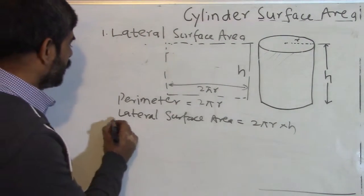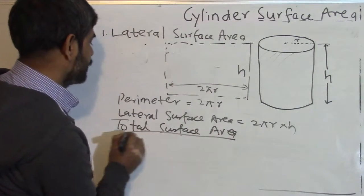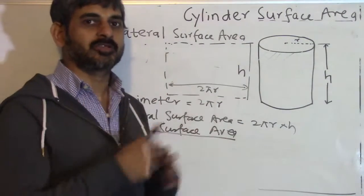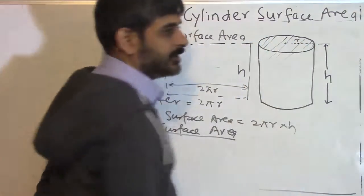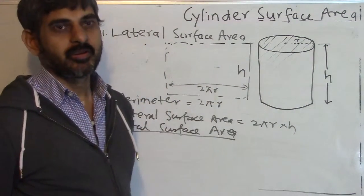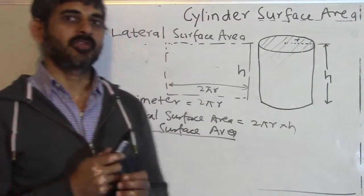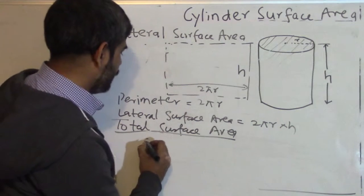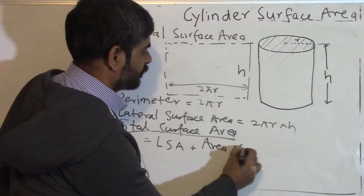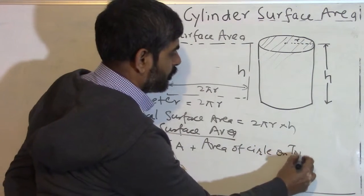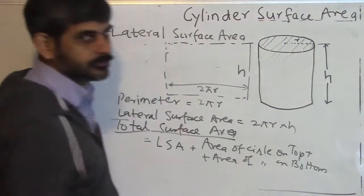The next thing we are going to find out is the total surface area. Think about the cylinder as a solid cylinder. If it is a solid cylinder, it has some area on the top and the same area on the bottom. If you add the lateral surface area, the top area, and the bottom area, you get the total surface area of this cylinder.